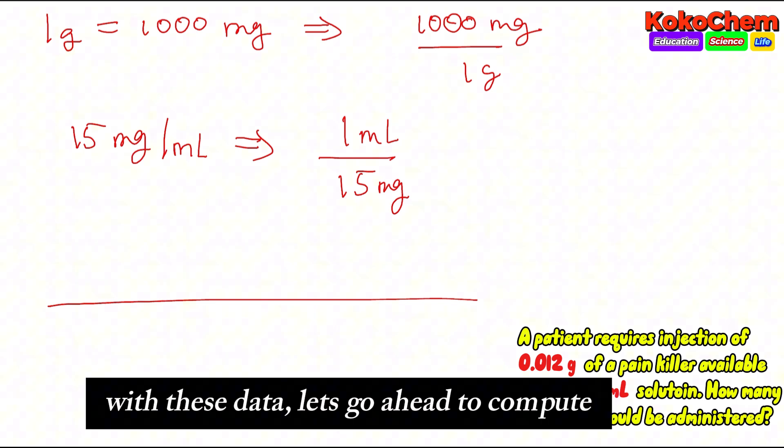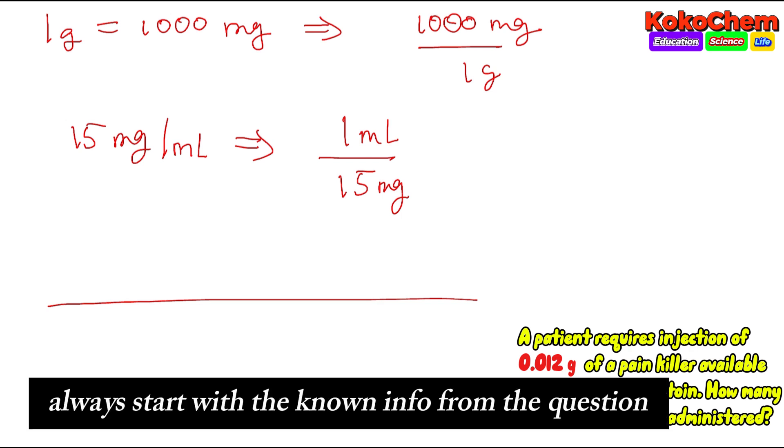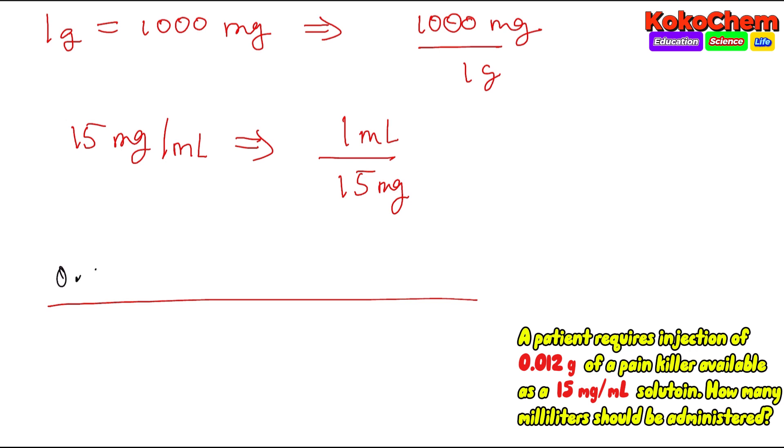In the previous classes we used the long division line, the long vertical lines. Today we start with 0.012 grams. Put the grams on top so that grams will cancel.